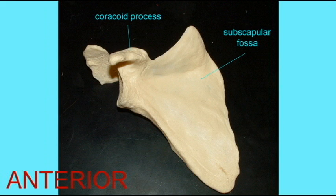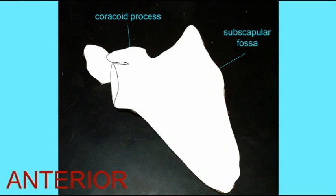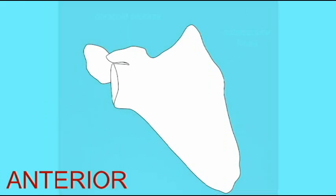On the anterior surface of the scapula, you can identify the glenoid cavity, the acromion, the coracoid process, and a depression known as the subscapular fossa. This is the origin for the rotator cuff muscle, the subscapularis.